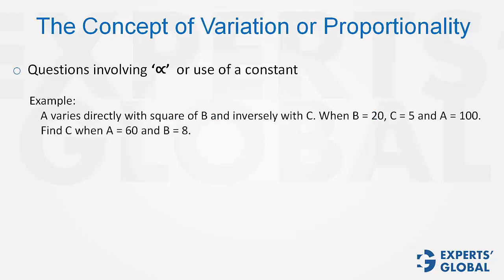Example: look at this one. A is proportional to square of B and inversely proportional to C. So, A is proportional to B² upon C can be written.